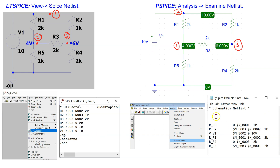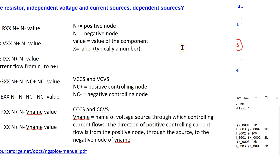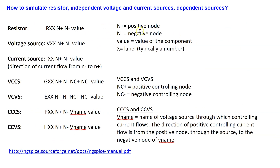Unfortunately, the LTSpice and PSpice netlists are not directly compatible with PySpice. Thus, we need to be able to write the netlist ourselves for a given circuit. In this video, we will focus on simulation of circuits containing only resistors, independent voltage and current sources, and the four different types of dependent sources. The information shown here is the SPICE syntax summarized from the NGSpice user manual. This SPICE syntax will help us understand how to write the PySpice netlist properly.